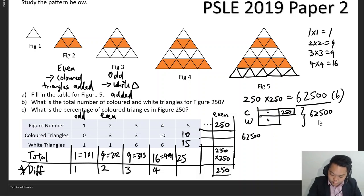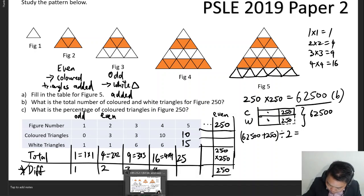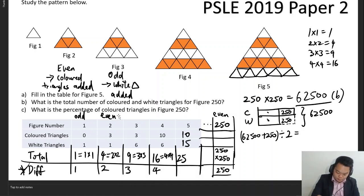Actually, for this it's easier if you add this on. You add on 250, you divide the whole thing by two. You will obtain 31,375, so you have 31,375 colored triangles in figure 250.